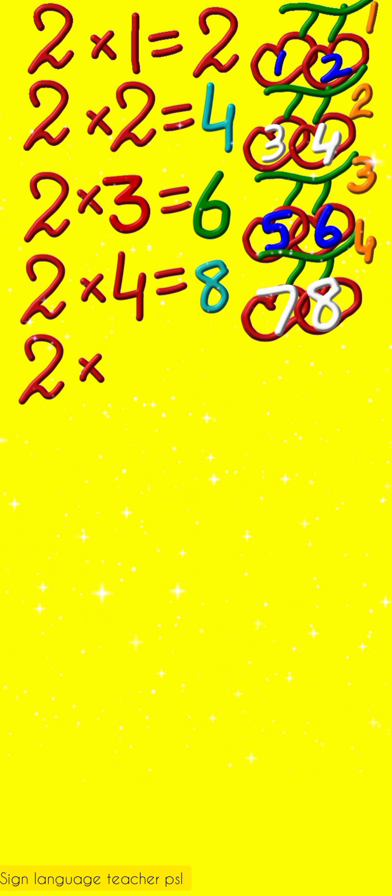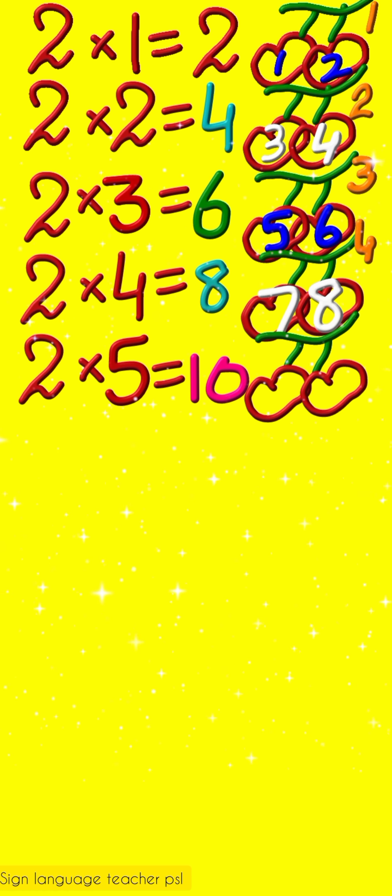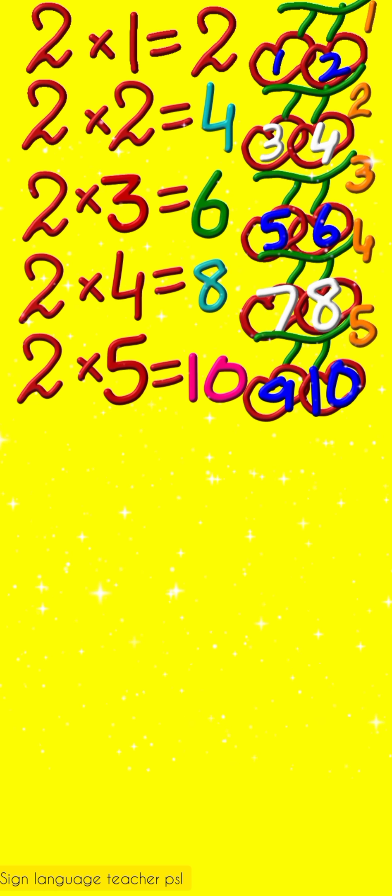Adding two more cherries to this, it will become ten. Two fives are ten. Fifth twig has two more cherries. Adding two more cherries, it will become ten. Nine and ten.